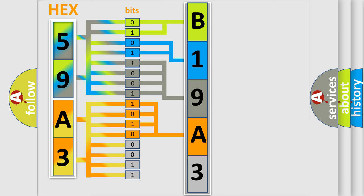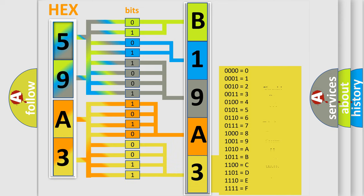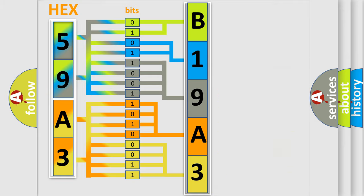A single byte conceals 256 possible combinations. We now know in what way the diagnostic tool translates the received information into a more comprehensible format.